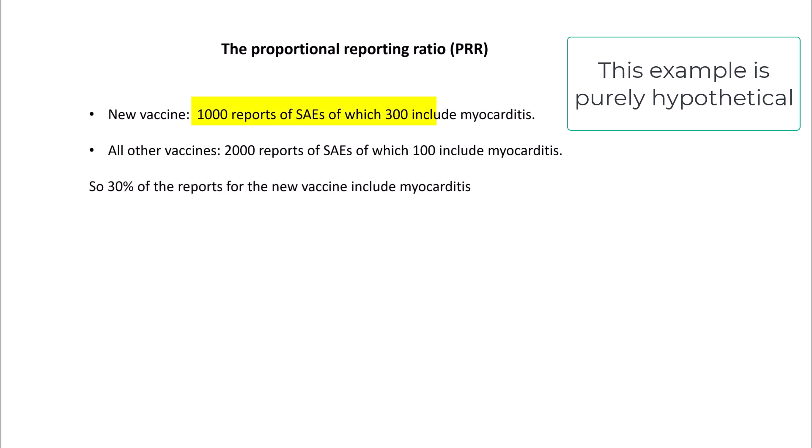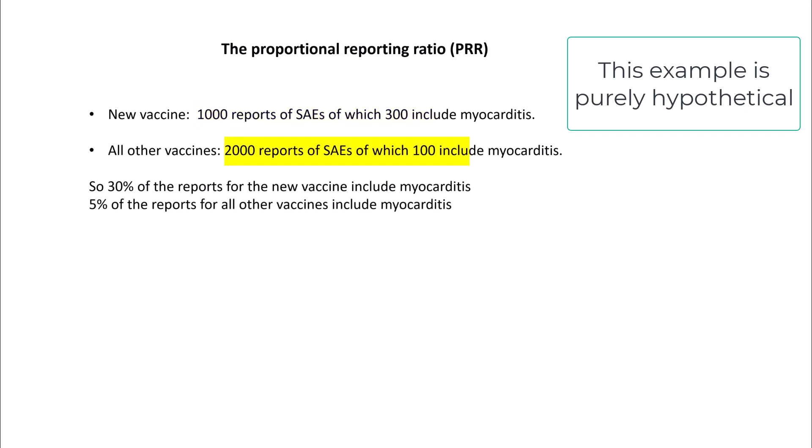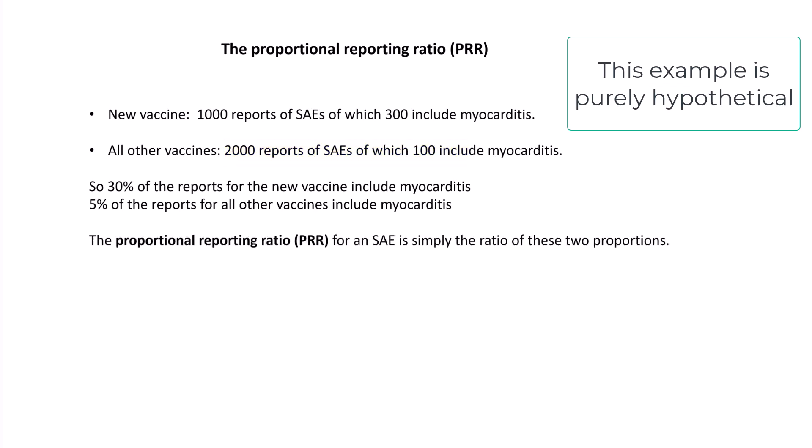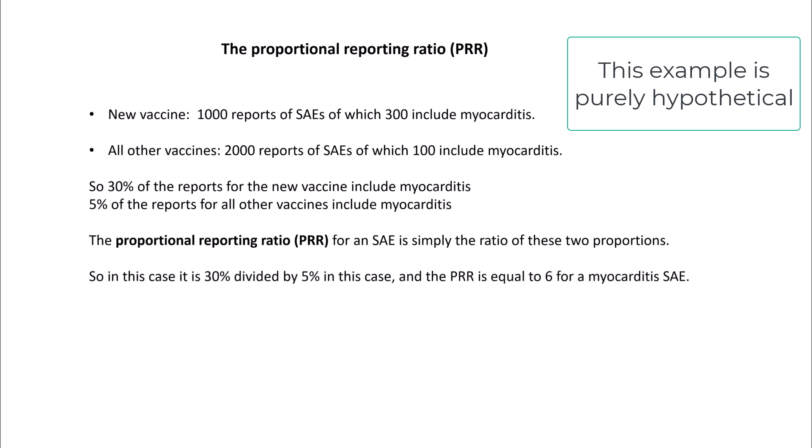That means that 30% of the reports for the new vaccine include myocarditis compared to just 5% for all other vaccines. This is used to calculate the proportional reporting ratio — that's simply 30% divided by 5% — so the PRR in this case is equal to 6 for a myocarditis serious adverse event.